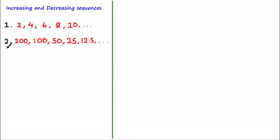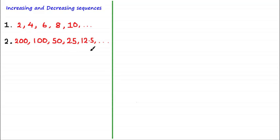Now let's have a look at the second one. You should be able to see that this is a decreasing sequence, and it's decreasing because the next term is less than the previous term in each case. So 100 is less than 200, 50 is less than 100, 25 is less than 50, and so on. Again numerically you can see the behavior of this sequence is decreasing.